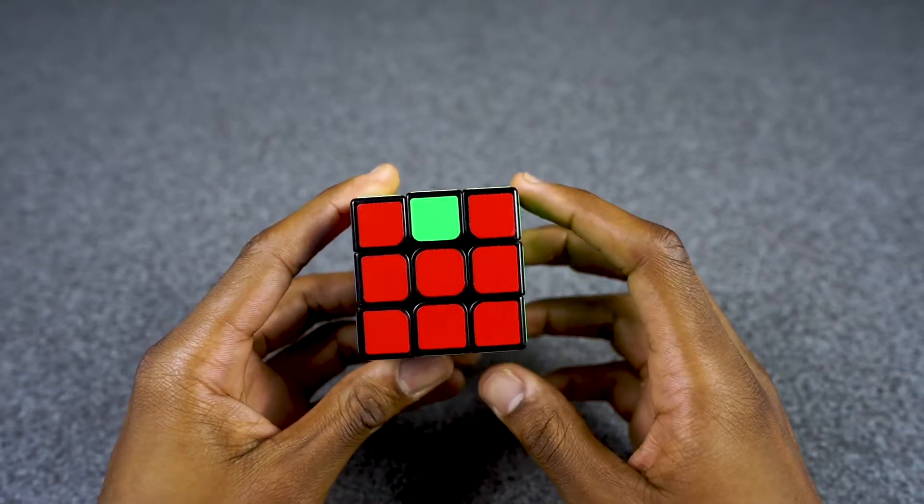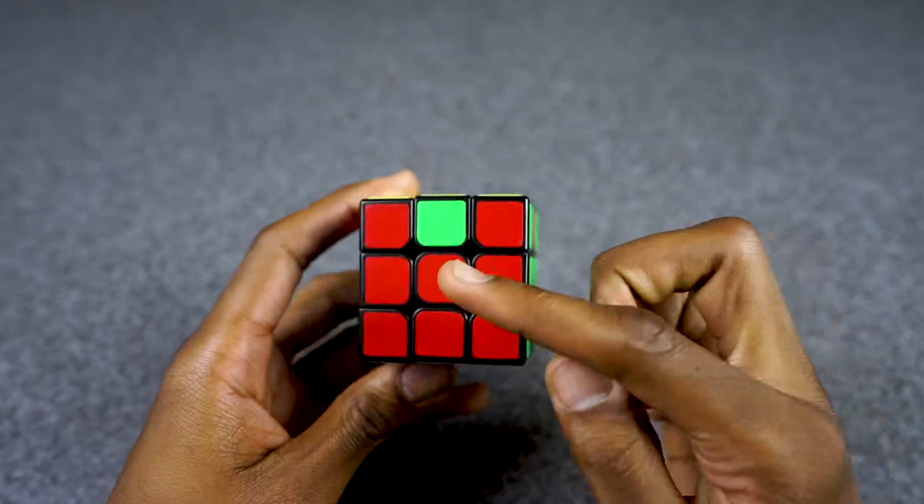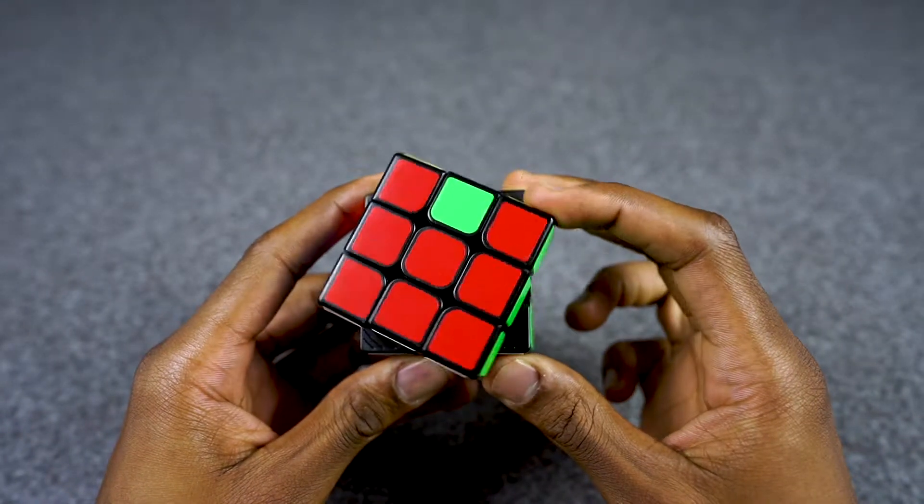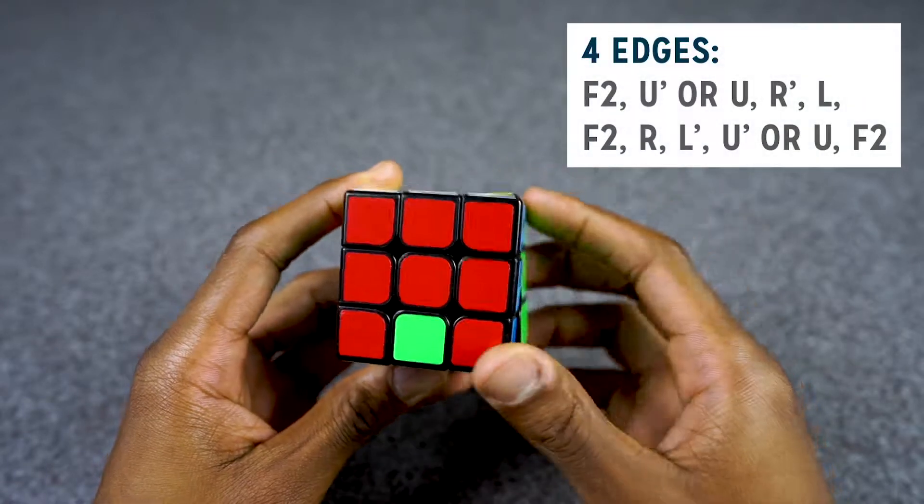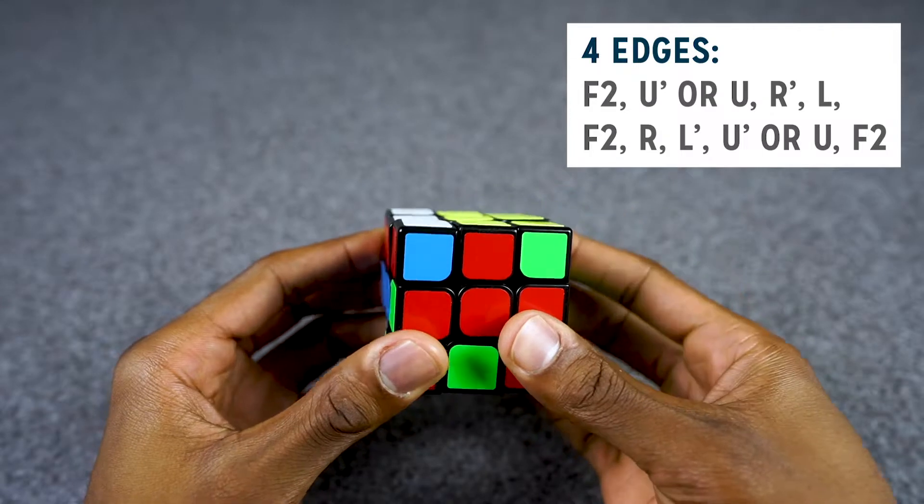It's the same thing, it's intuitive, so you're going to have to look at the dot and know where it goes. In this case we're going to do an F2, bring that dot piece here. This time we're going to be doing a U instead of a U prime.